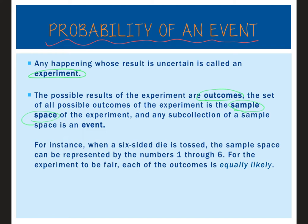Any subset of a sample space is called an event. For instance, if you want the number 2 to pop up in those combinations, that is the event you're looking for. When a six-sided die is tossed, the sample space is the numbers 1 through 6. For the experiment to be fair, each outcome has to be equally likely — we assume no weighted die and no weighted coin; every outcome has an equal opportunity of happening.